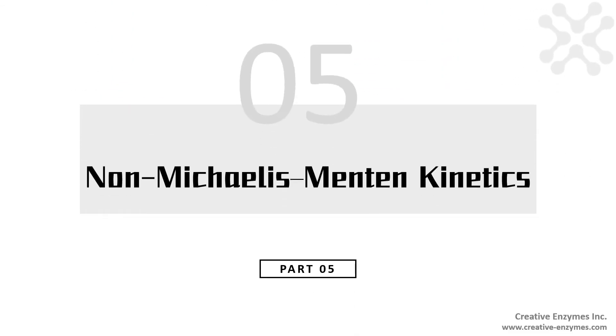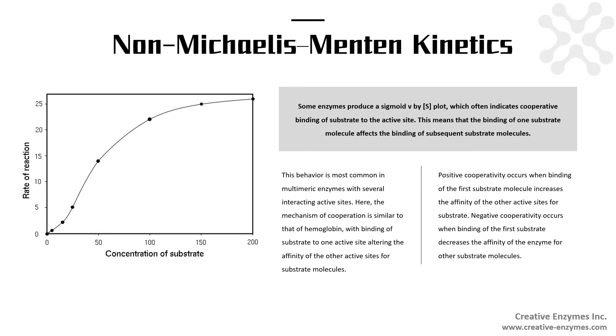Non-Michaelis-Menten kinetics. Some enzymes produce a sigmoidal V by S plot, which often indicates cooperative binding of substrate to the active site. This means that the binding of one substrate molecule affects the binding of subsequent substrate molecules. This behavior is most common in multimeric enzymes with several interacting active sites.